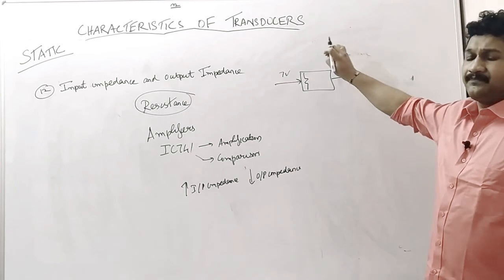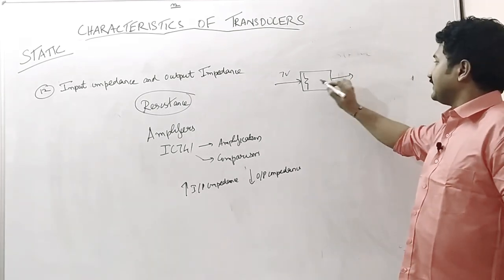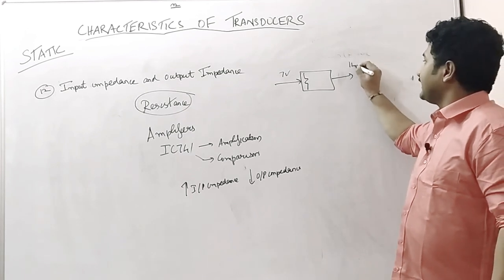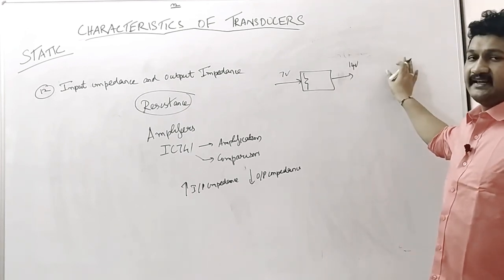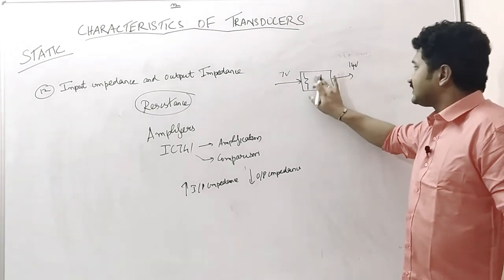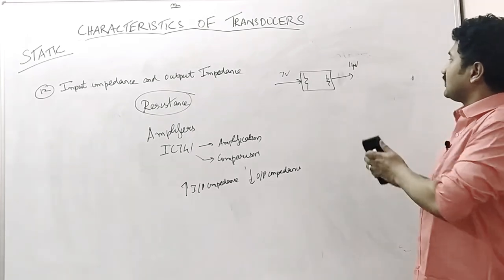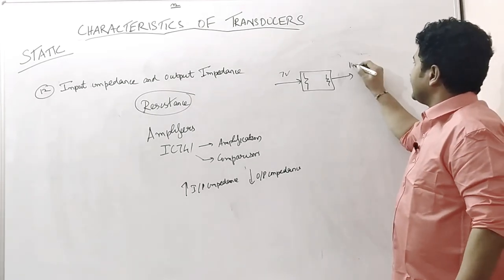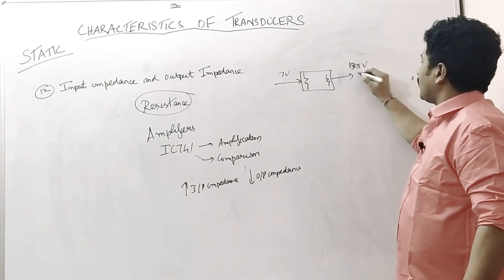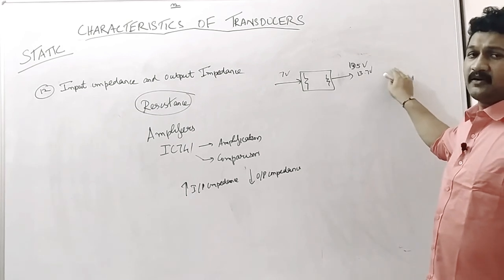For example, if it has to be amplified as 14 volts, all the 14 volts should come fully. If there is some glitch here or some internal resistance here, we cannot get this 14 volts—we will get only 13.5 volts or 13.7 volts. This is not a proper, fullest output.